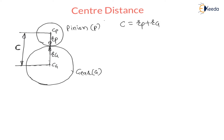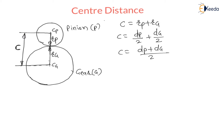Therefore, center distance equals diameter of pinion divided by 2, plus diameter of gear divided by 2. That is, C = (Dp + Dg) / 2. We already know that module m = D / T, where D is pitch circle diameter and T is number of teeth.